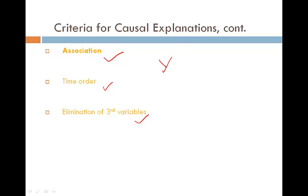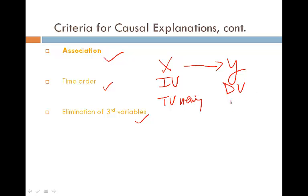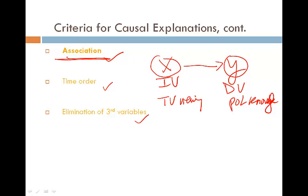Let's say X causes Y, where X is the independent variable and Y is the dependent variable. Let's say X is TV viewing and Y is political knowledge — meaning the more we watch TV, the more political knowledge we develop. For criterion one, the independent variable and the dependent variable should have some relationship. For example, the more you watch TV, the more knowledge you develop — a positive relationship. Or alternatively, the more you watch TV, the less political knowledge you have — either way, there is some kind of relationship.